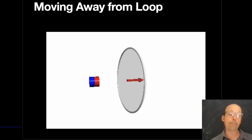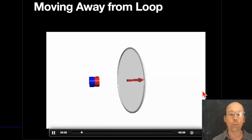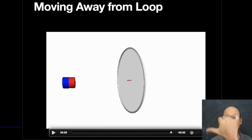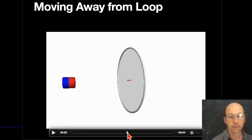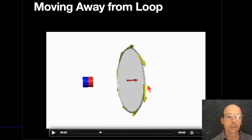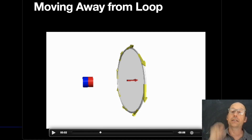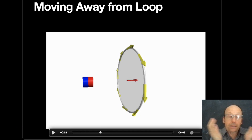Now what if I take that magnet and pull it away from the coil? The magnetic field due to the magnet still points to the right, but when I pull it away, the direction of the induced current reverses. Using the right-hand rule, that current makes a magnetic field in the same direction as the magnet's field — because the flux is now decreasing, and the loop wants to oppose that decrease.